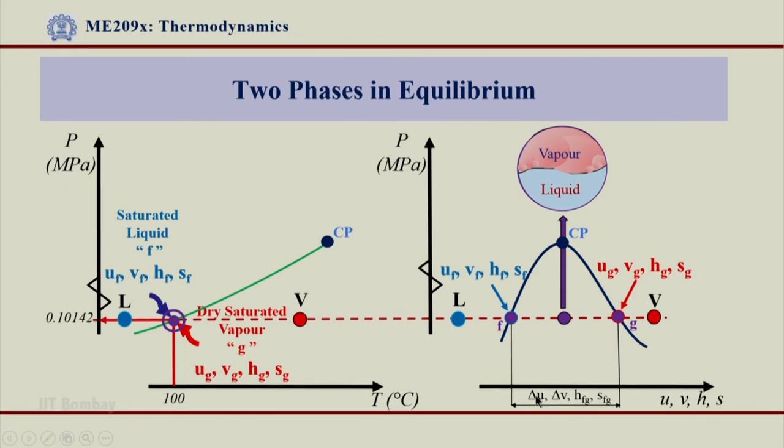While delta u, sometimes referred as ufg, delta v, sometimes referred as vfg, can be calculated because we know the value of uf and vf.